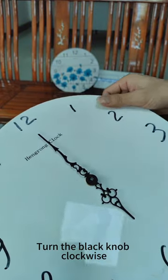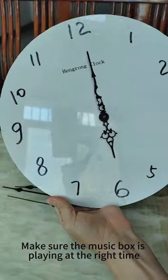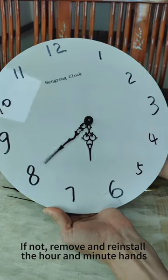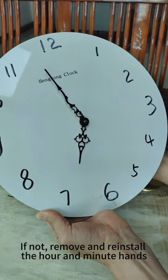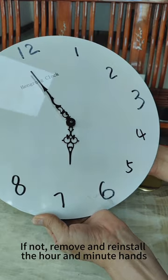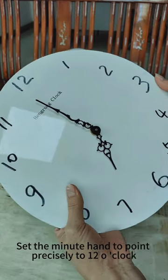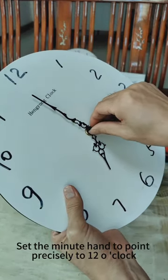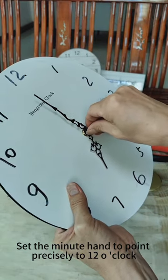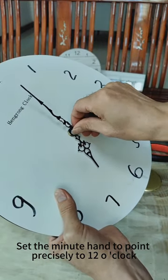Turn the black knob clockwise. Make sure the music box is playing at the right time. If not, remove and reinstall the hour and minute hands. Set the minute hand to point precisely to 12 o'clock.